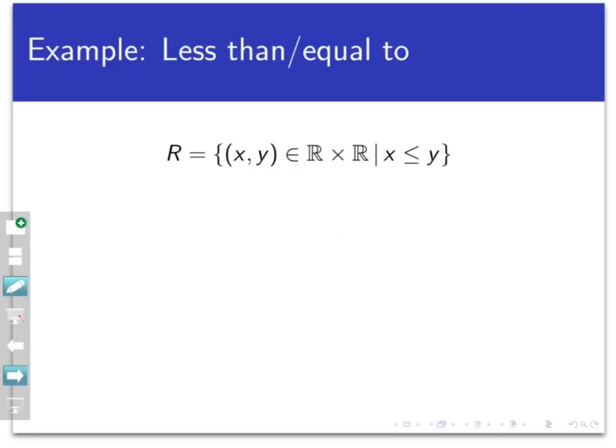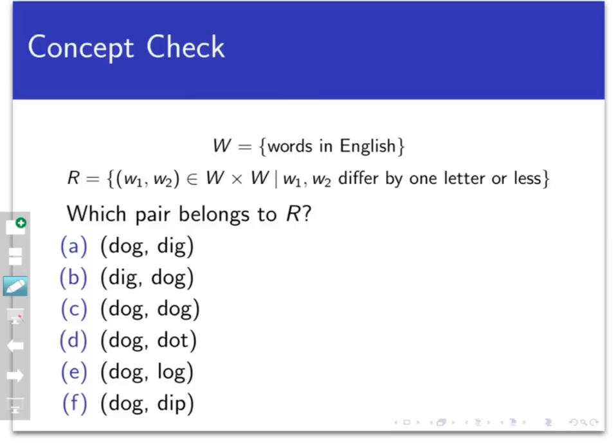So let's see how well you're getting the concept of a relation with a concept check. Let W be the set of all English words that we saw earlier, and define a relation R on W as follows: R is the set of all pairs of English words (w₁, w₂) such that w₁ differs from w₂ by one letter or less. This would be an important relation if you were thinking about spellcheck software or language recognition. Which of the following pairs belongs to R? Select all the ones that apply and come back when you're ready.